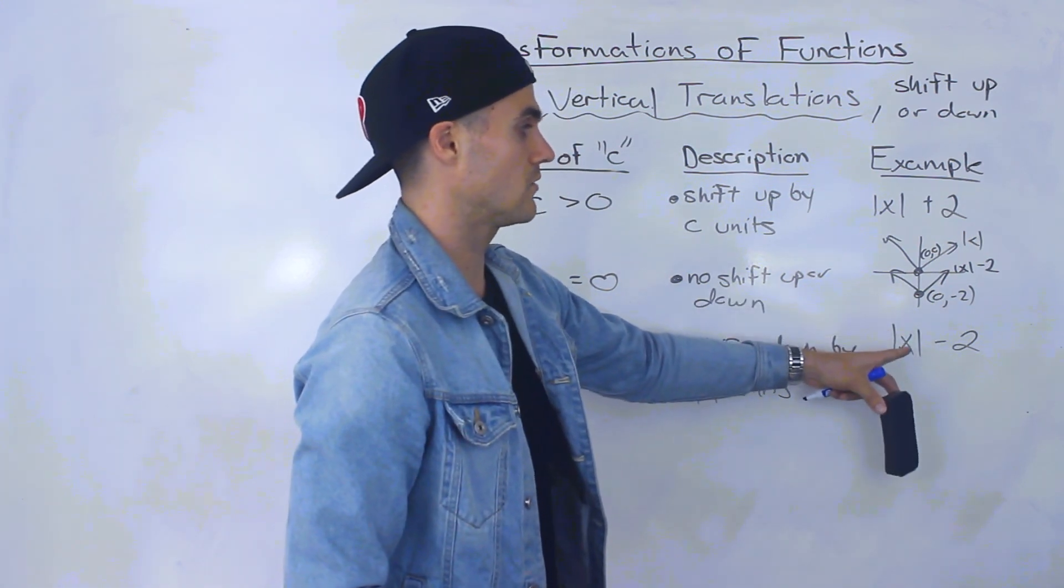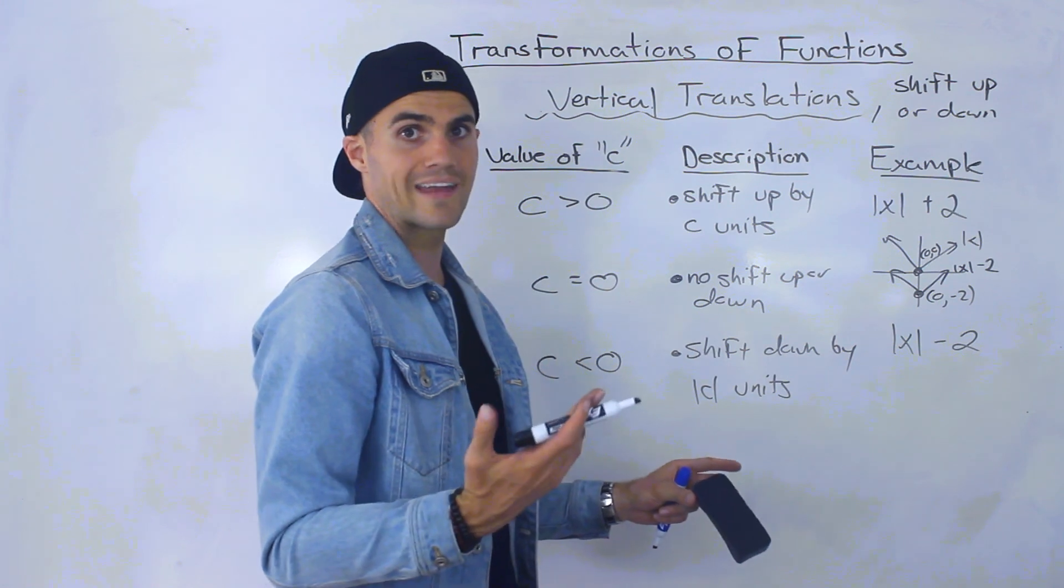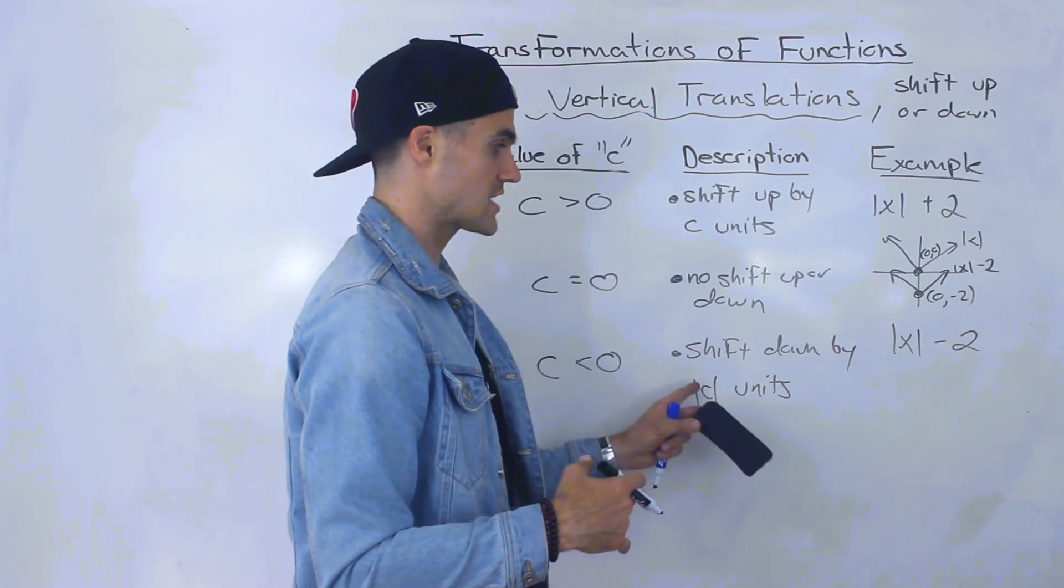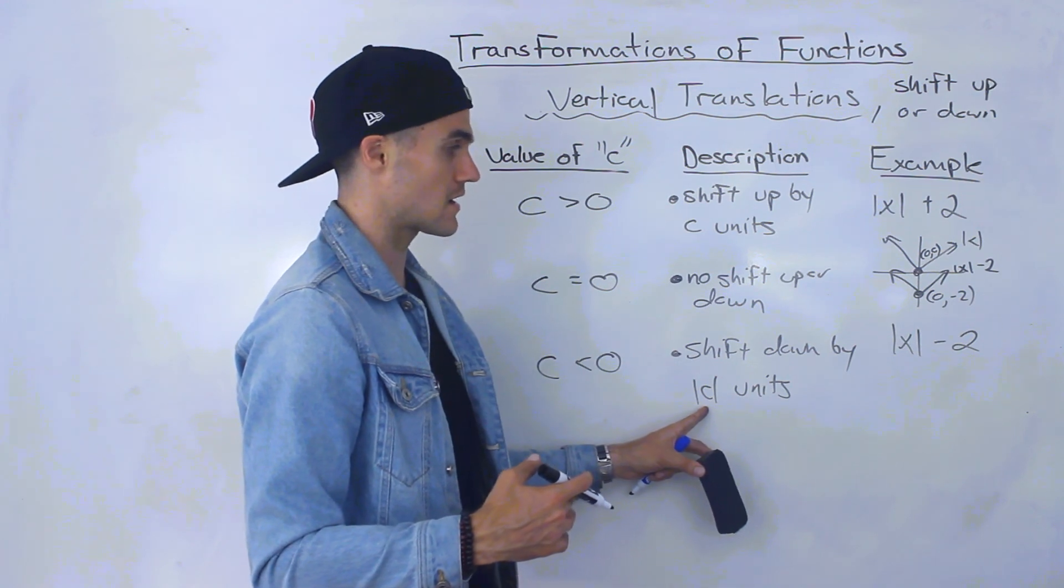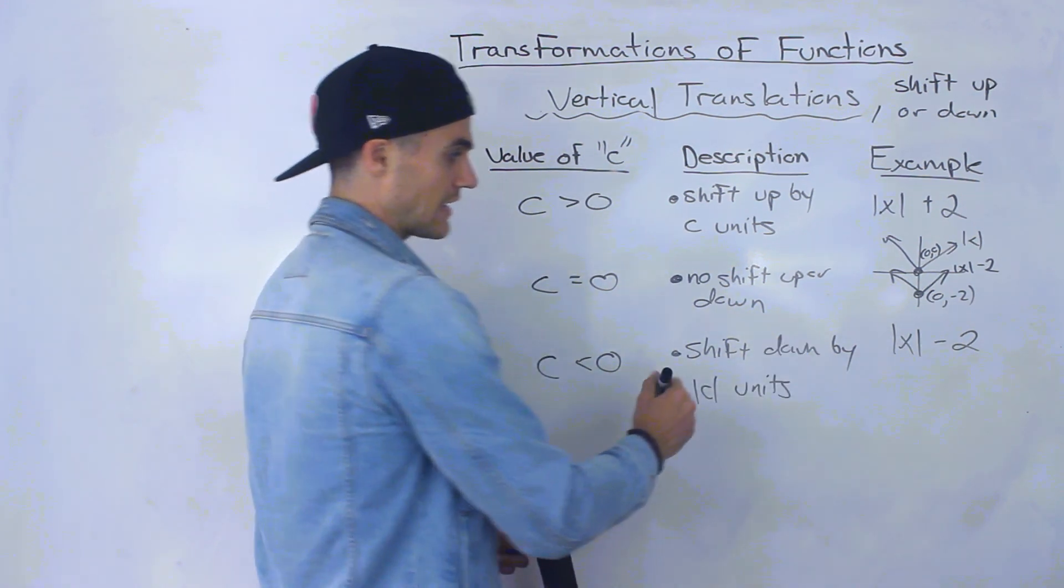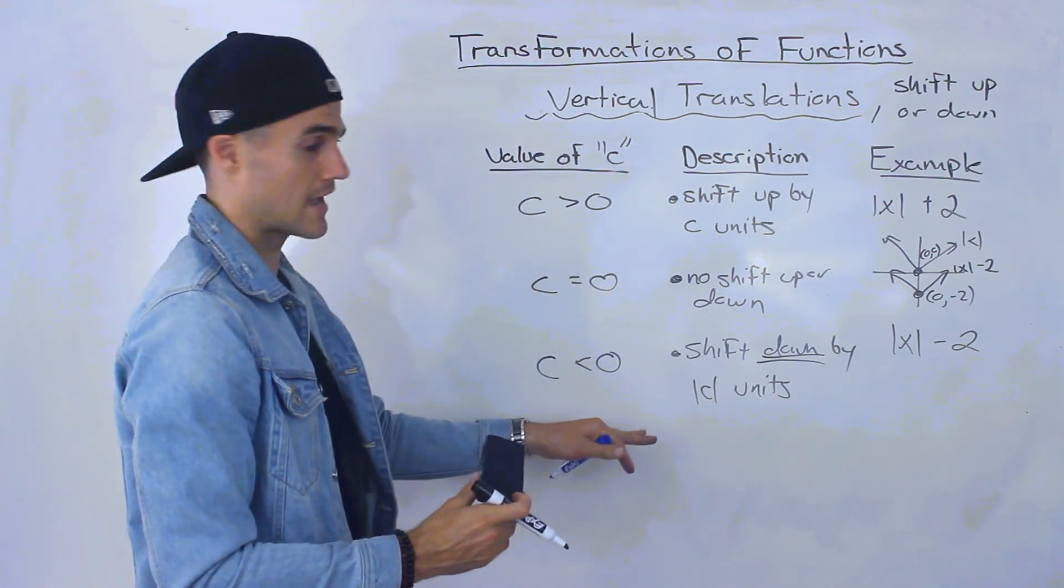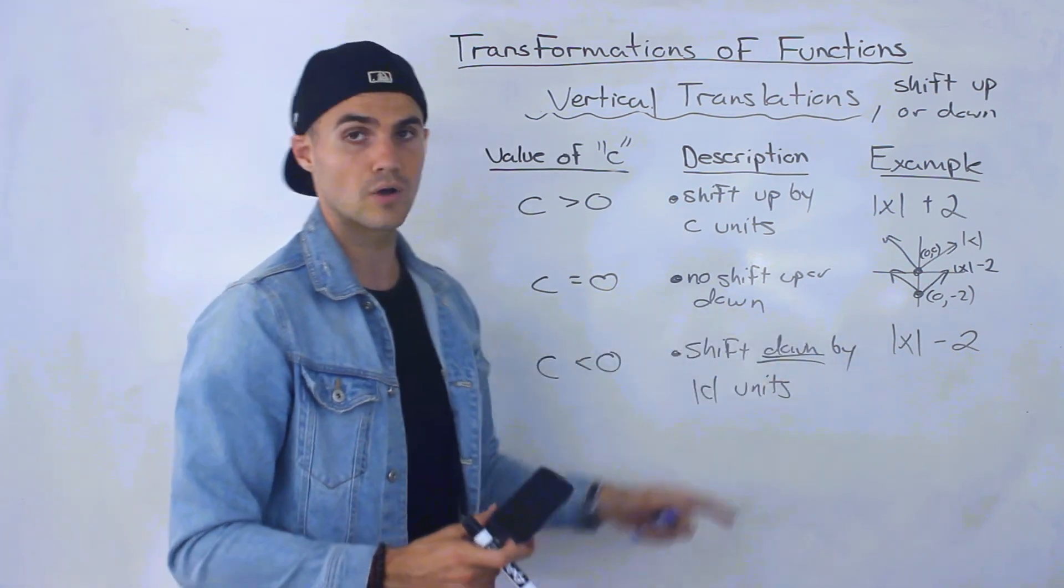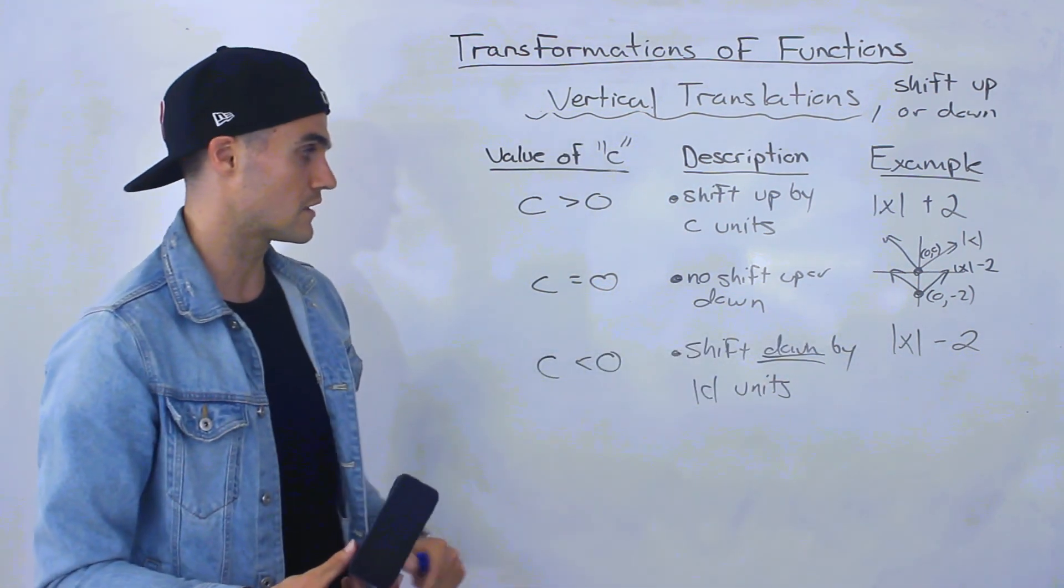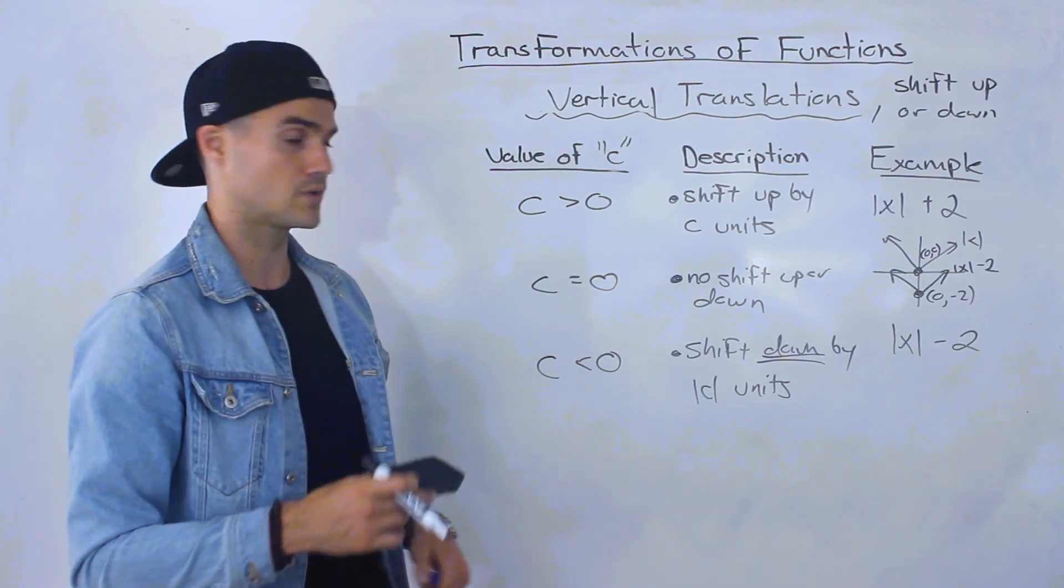Right, took it and shifted it down by two units. And notice that we don't say we shifted it down by negative two units. We just say we shifted it down by two units, hence why that absolute value of C is there. The fact that C is negative gets described here, the fact that we're shifting it down. So you don't have to say negative two units. You would just say the absolute value of that C value when it's negative. So you would say we're shifting it down by two units.